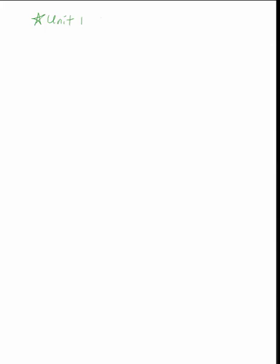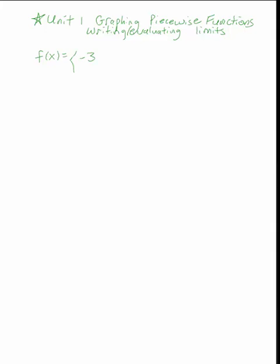Let's look at a couple of ideas from unit one. We'll look at graphing piecewise functions and also writing and evaluating limits. Let's take something piecewise that's not too difficult to graph: f of x equals negative 3 if x is less than 1, and 2x if x is greater than or equal to 1.